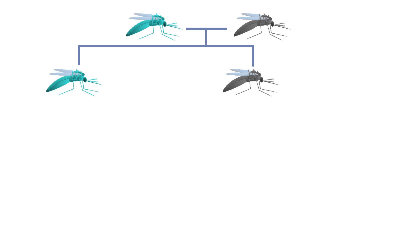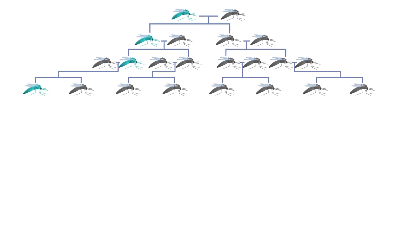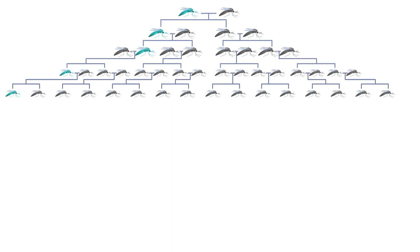Even if the altered gene doesn't reduce the likelihood of each mosquito surviving and reproducing, it may persist at a low frequency in the ocean of wild mosquitoes, or it might go extinct after several generations of especially unlucky inheritance.